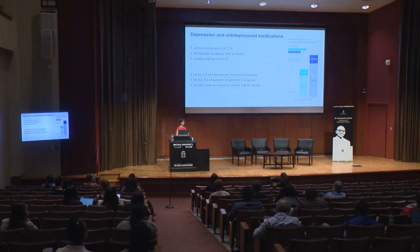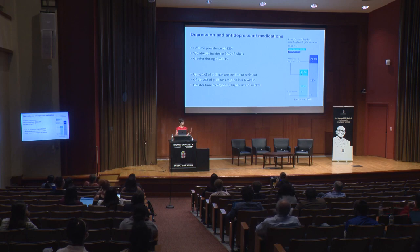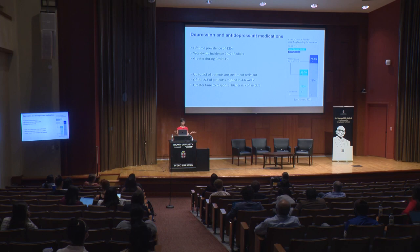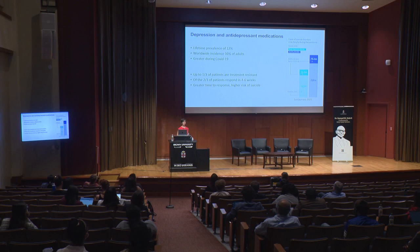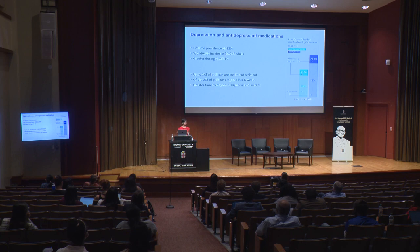Depression is very common, and the COVID pandemic increased the numbers sharply and prolonged depression. We are lucky that we can treat depressive symptoms with antidepressants. However, one third of patients do not respond to antidepressants, and two thirds who do respond take four to six weeks for symptoms to get better — which is an important timeline because the longer the response time, the higher the risks, especially the risk of suicide.